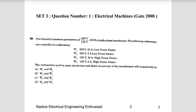The current ratings differ between W1 and W2, and between W3 and W4. The voltage ratings of W1 and W2 are the same, and W3 and W4 are the same.